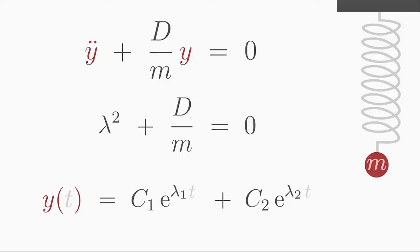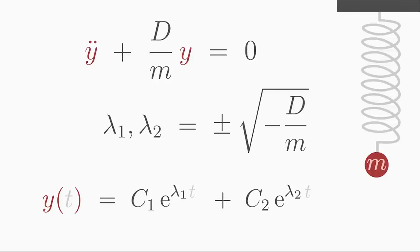For this equation we don't even need the quadratic formula. We get the solution directly if we first bring D over m to the other side and then take the square root. Consider that the inverse of squaring gives two solutions, a positive and a negative square root.